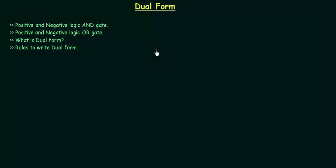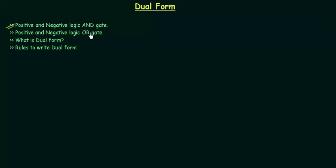In the last presentation we completed positive and negative logic. In this lecture we are going to cover positive and negative logic AND gate, positive and negative logic OR gate, what is dual form, and finally we will derive rules to write dual form. So we will start with positive and negative logic AND gate.